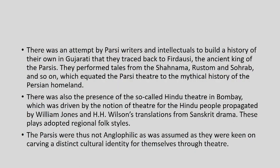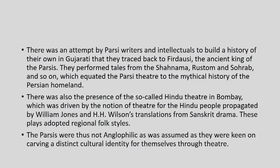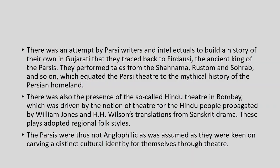Shakespeare's plays were also adapted in these performances. There was an attempt by Parsi writers and intellectuals to build a history of their own in Gujarati, tracing back to Firdausi, the ancient king of the Parsis. They performed tales from the Shah Nama, Rustam and Sohrab, and so on, equating Parsi theatre to the mythical history of the Persian homeland. There was also the presence of so-called Hindu theatre in Bombay, driven by the notion of theatre for the Hindu people propagated by William Jones and H. H. Wilson's translations from Sanskrit drama. The Parsis were thus not Anglophilic — they were keen on carving a distinct cultural identity through theatre.